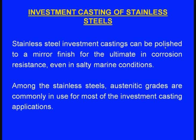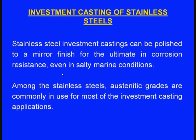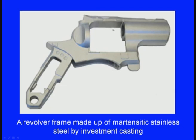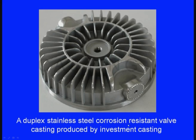Let us see the investment casting of stainless steels. Stainless steel investment castings can be produced to a mirror finish for the ultimate in corrosion resistance even in salty marine conditions. Among the stainless steels, austenitic grades are commonly in use for most investment casting applications. Examples shown include Pelton wheel blades made of austenitic stainless steel, a revolver frame made of martensitic stainless steel, and a duplex stainless steel corrosion resistant wall — all produced by investment casting process.